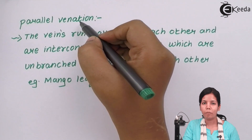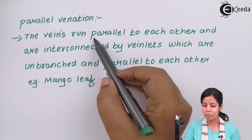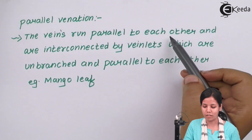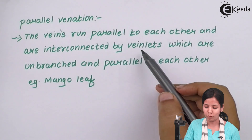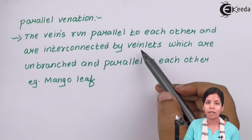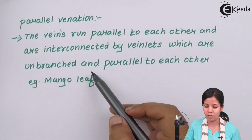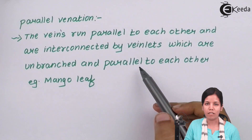In the case of parallel venation, the veins basically run parallel to each other, or they are at 90 degrees to each other. There is some interconnection due to the veinlets, but in parallel venation the veinlets are unbranched — they don't form a mesh-like network. They are just parallel to each other. An example of this could be a mango leaf.